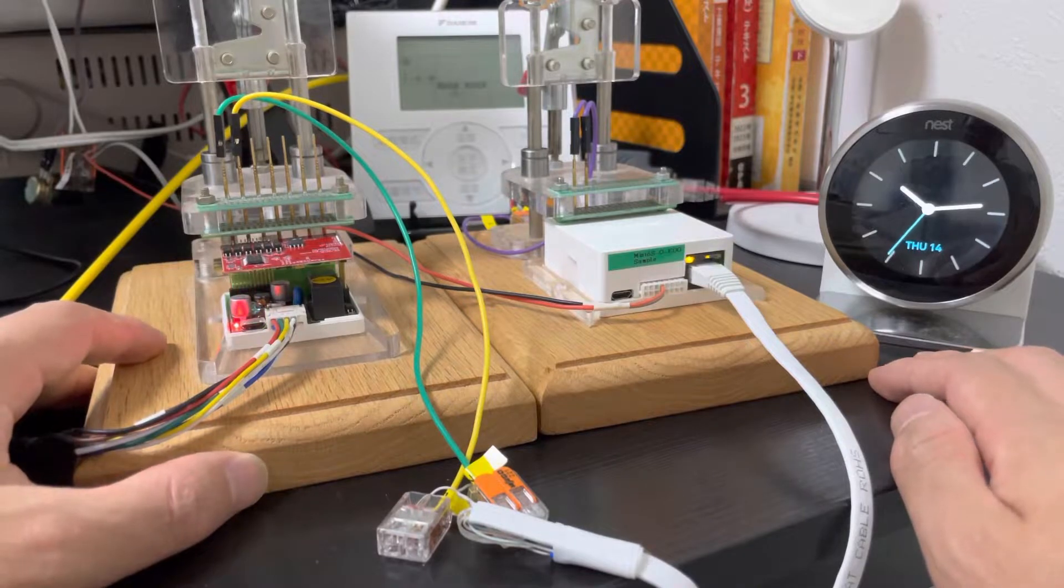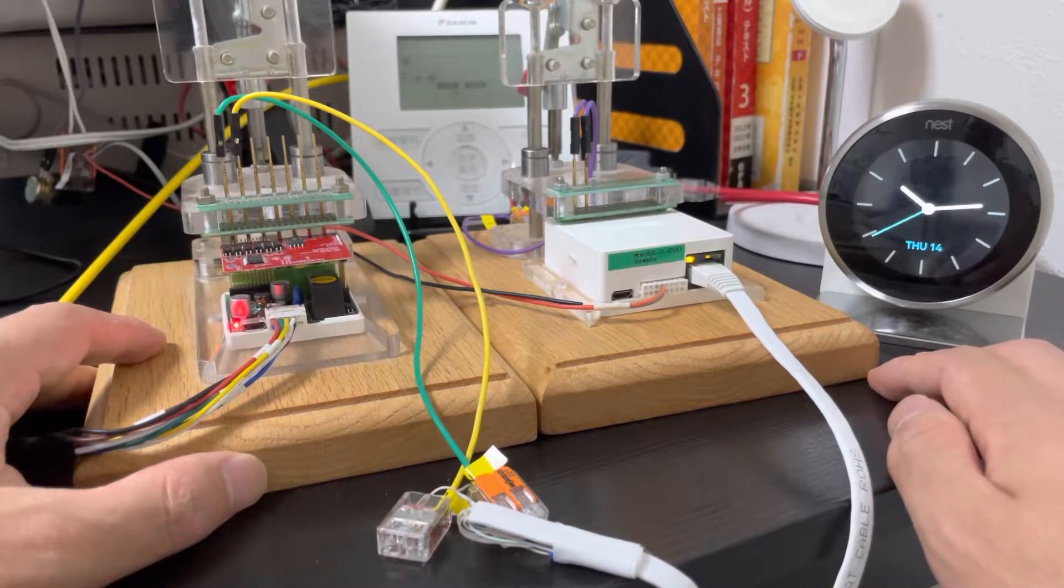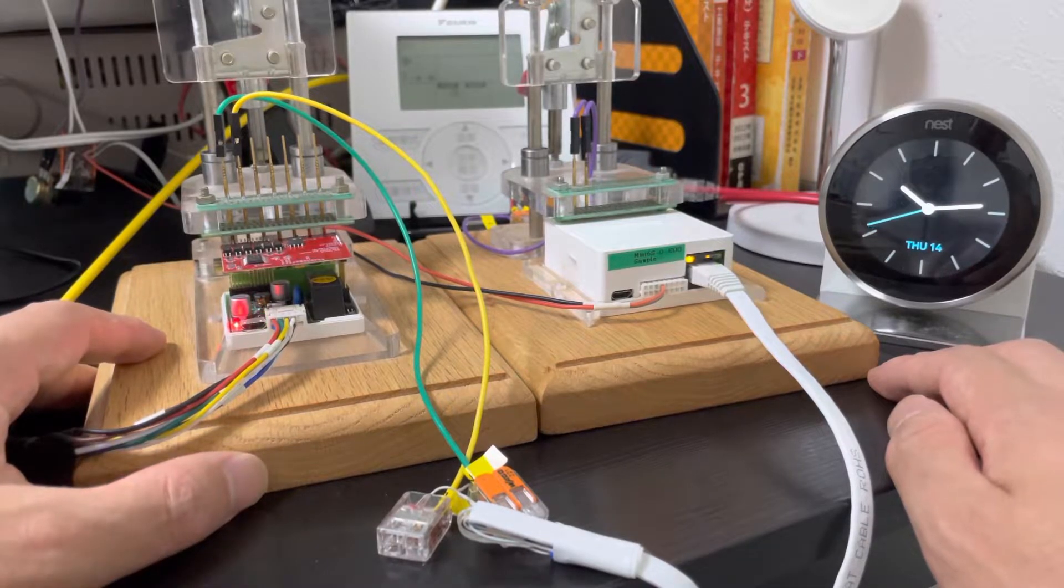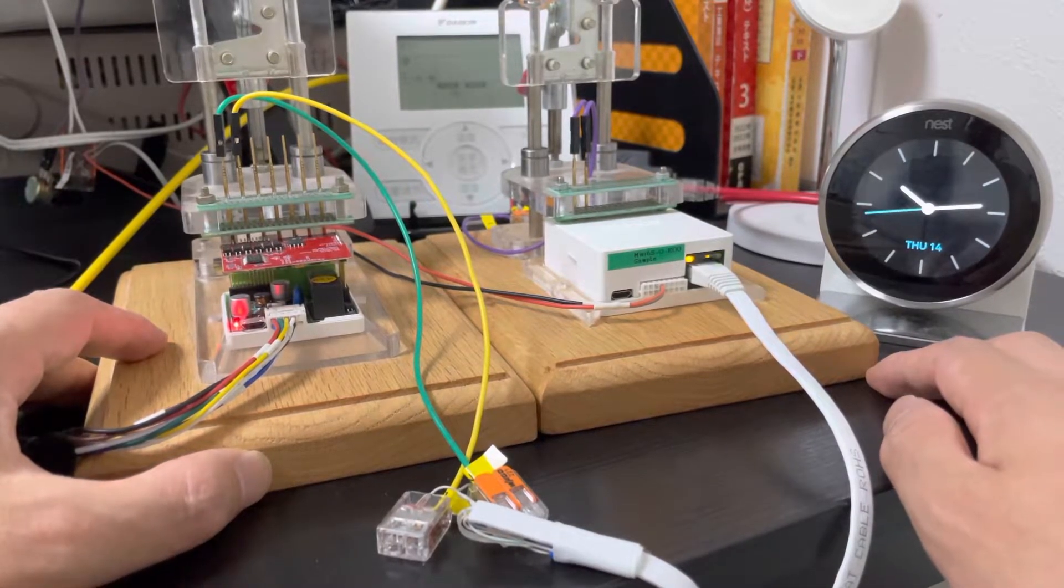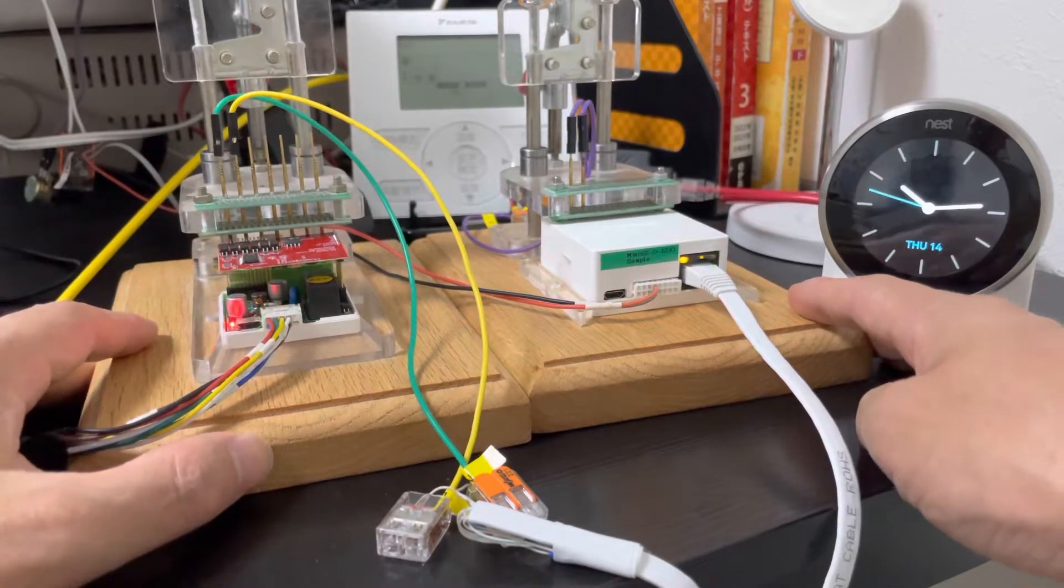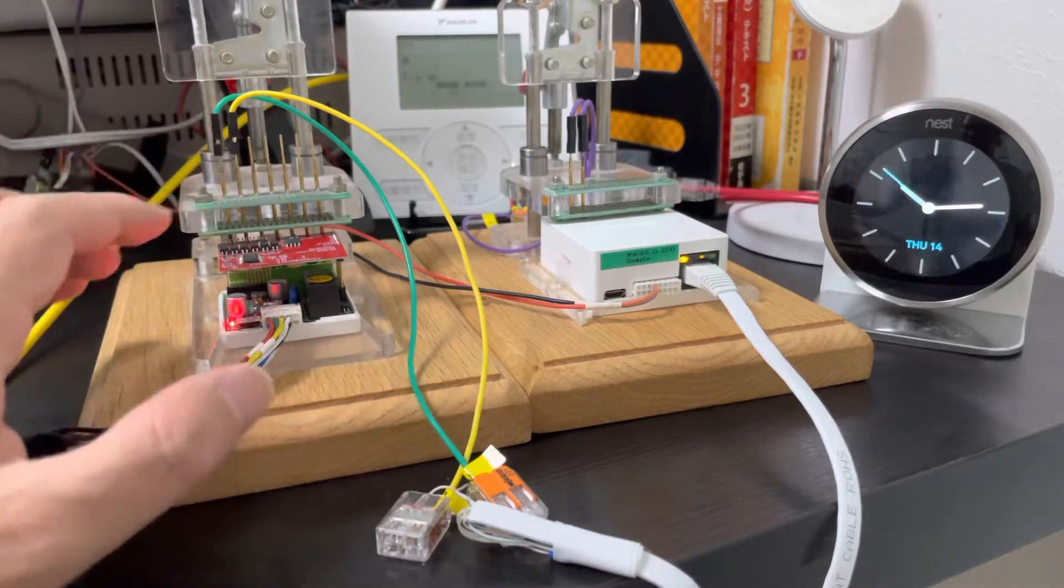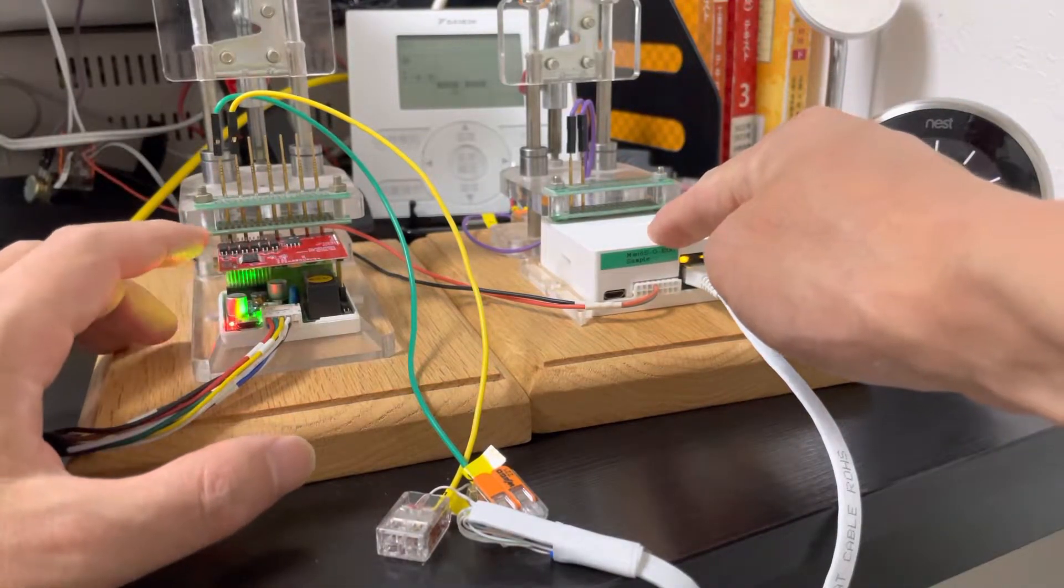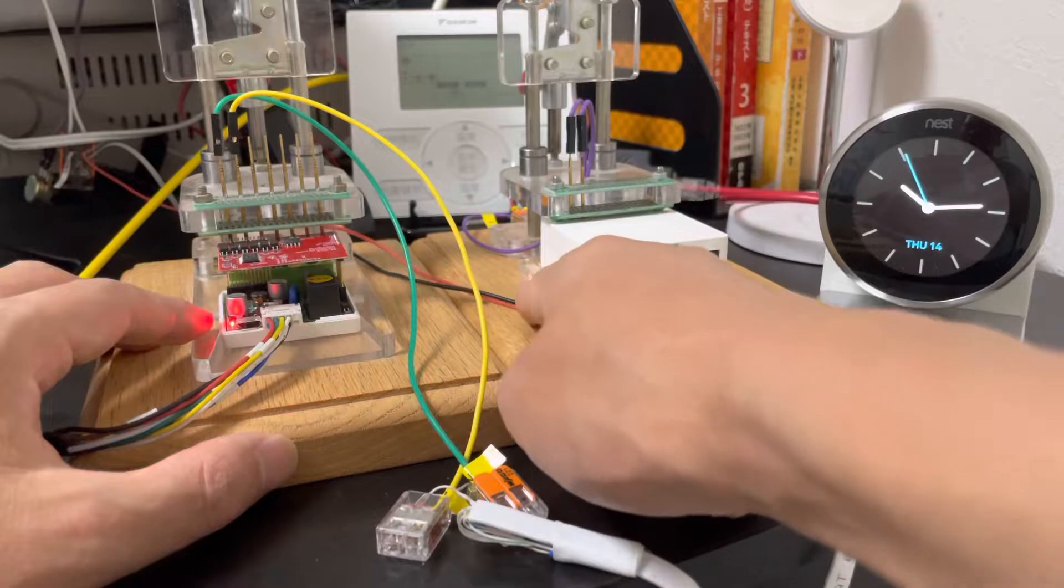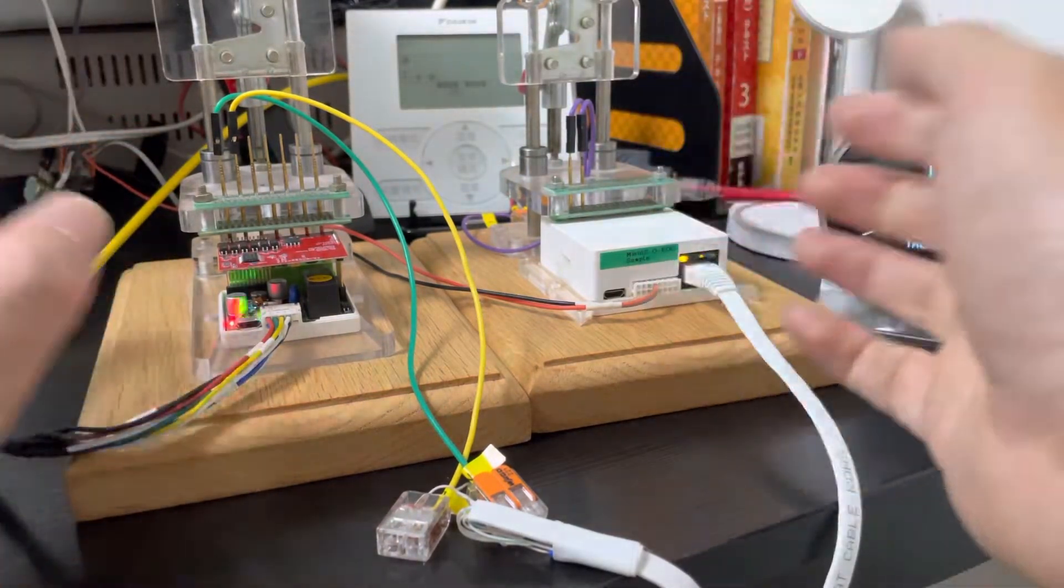You do not need to change anything. Just remove the original thermostat to the ceiling and use a smart thermostat to replace the original thermostat. And the master adapter and slave adapter use the original communication cable to connect together.